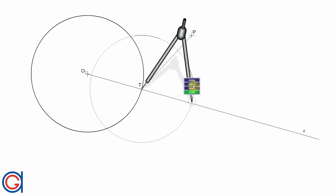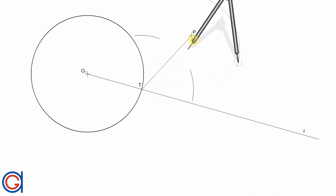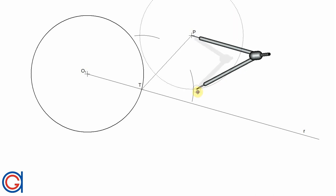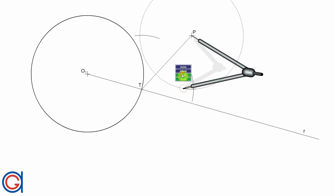And now with the same radius setting the compass on point P, we are going to describe two new arcs intersecting our previously drawn arcs as shown here.